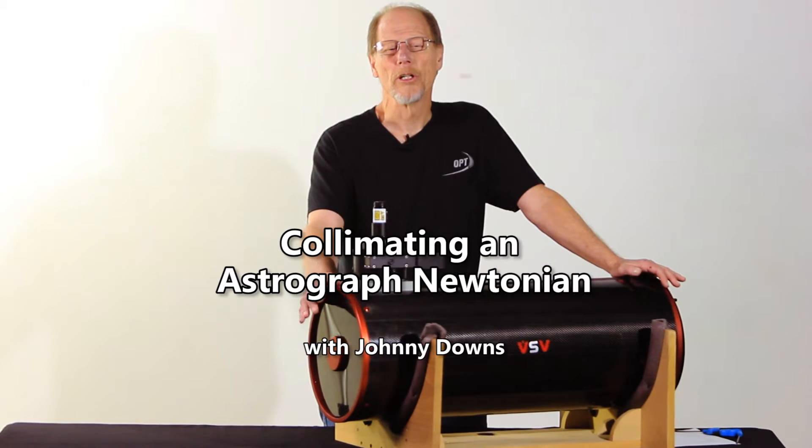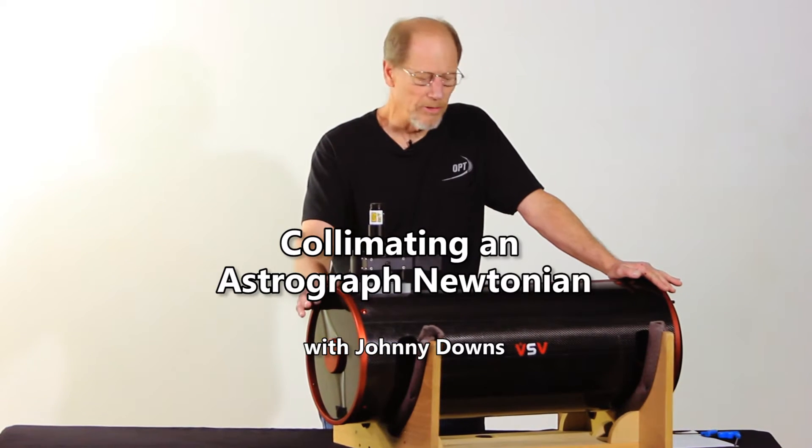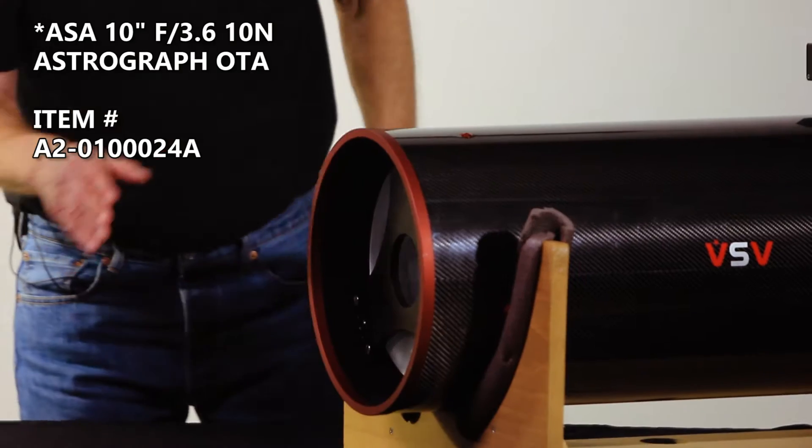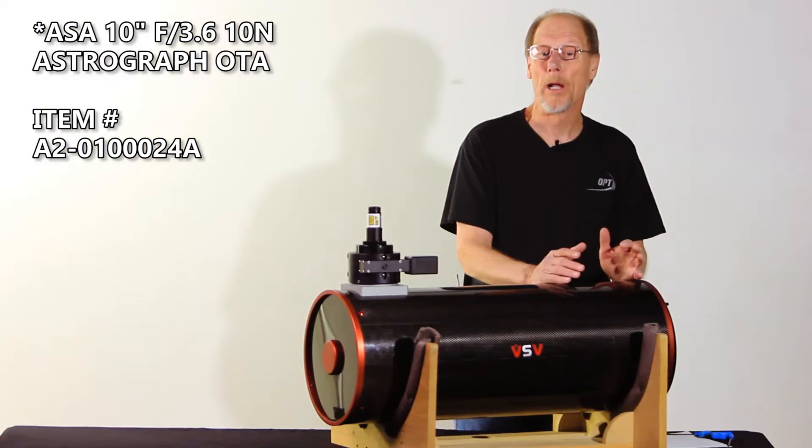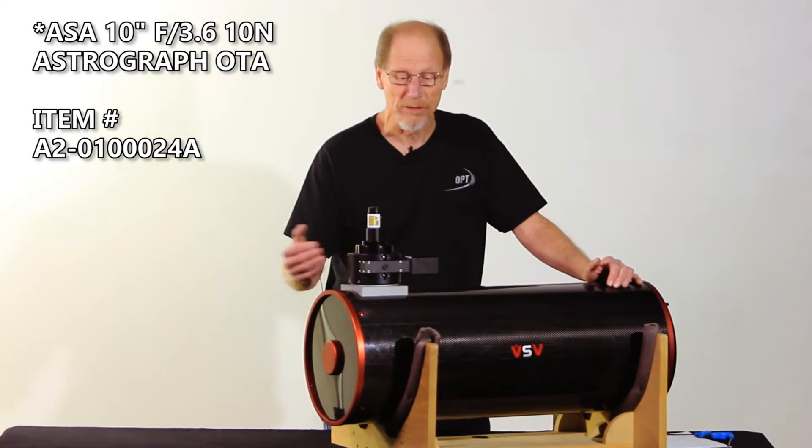Okay, today we're going to do a collimation on a Newtonian telescope. This happens to be an astrograph ASA. It's a simple parabolic mirror with a flat, so it takes a very little light path.